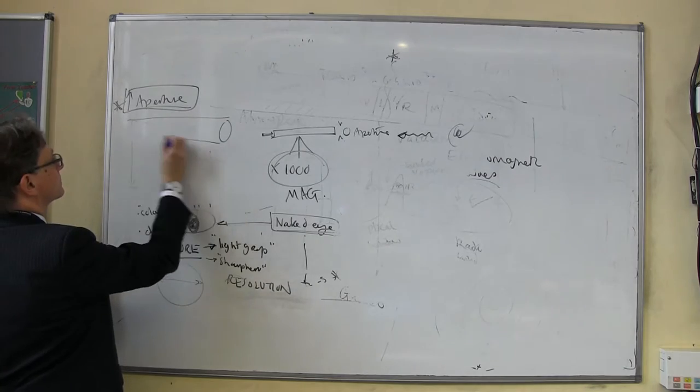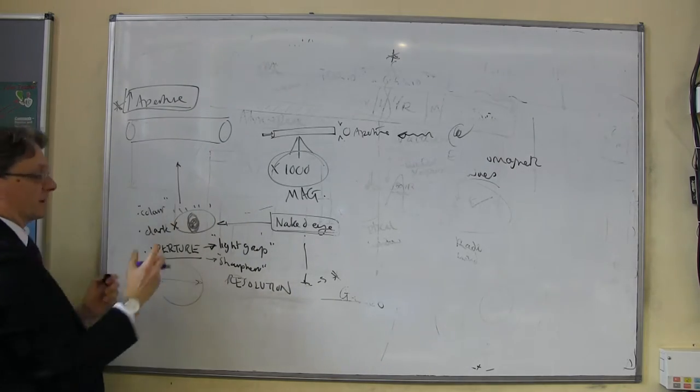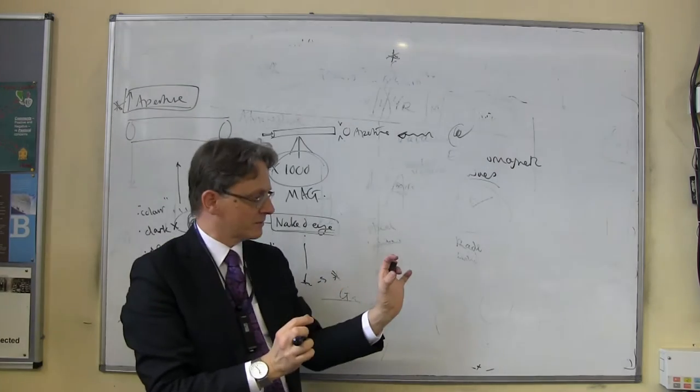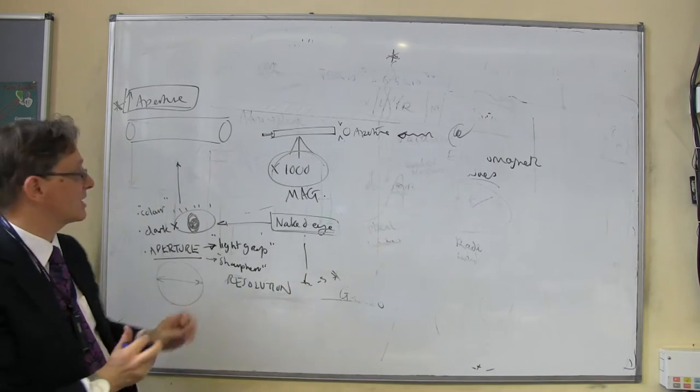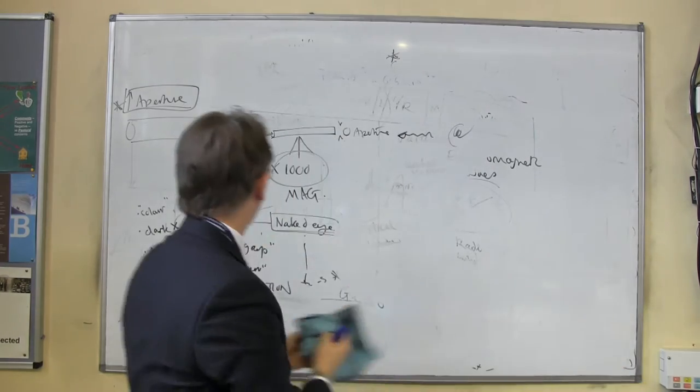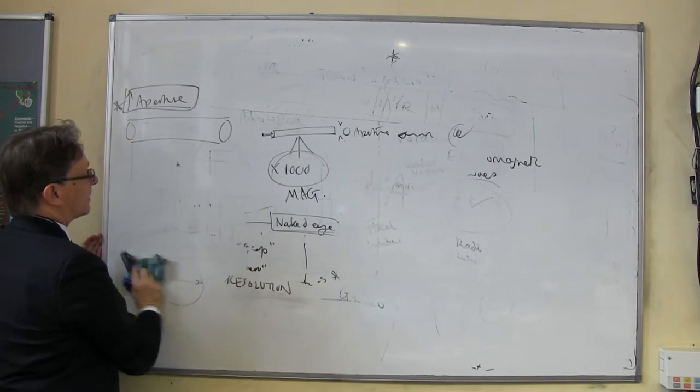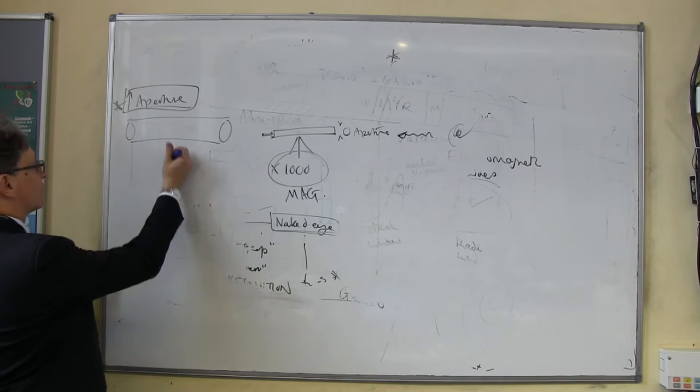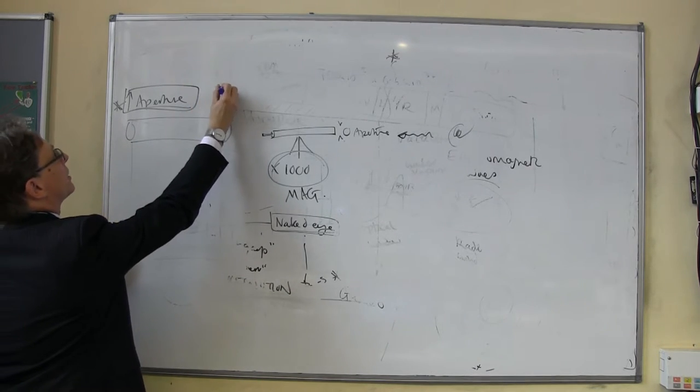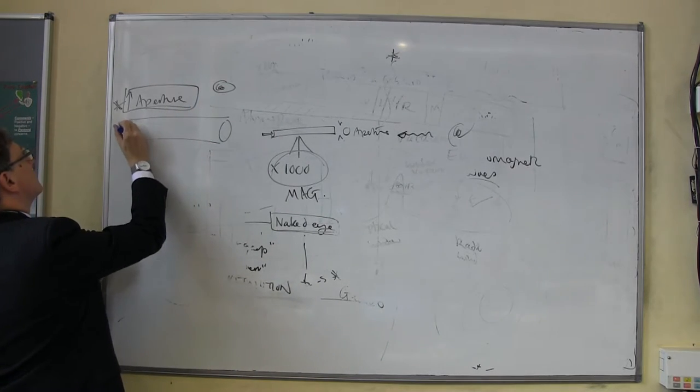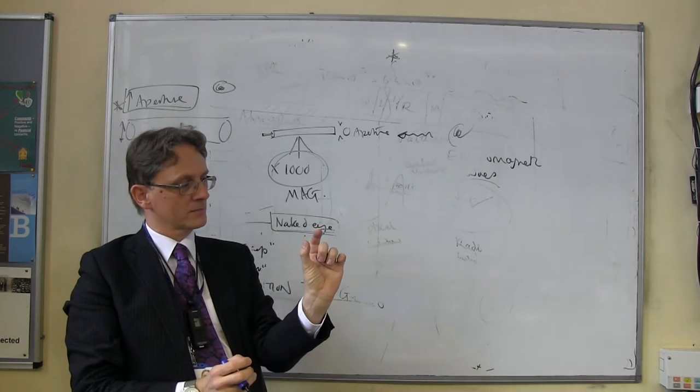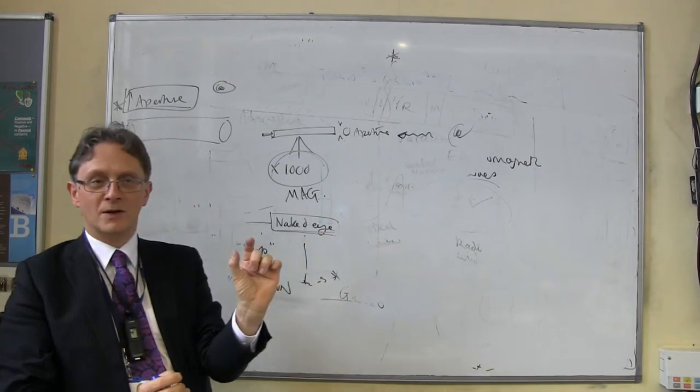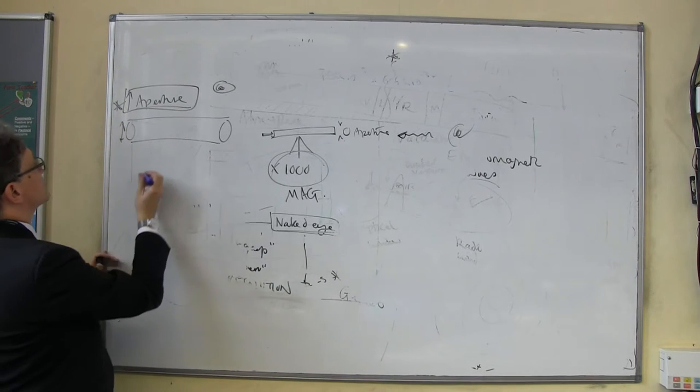Galileo's telescope, probably about that sort of size. I think it's in a museum in Florence, you can go and see it. The lenses are about that big. So, it is a step up from the human eye. It has a bigger aperture. We've increased the aperture from the size of the human eye to six, seven centimetres, something like that.